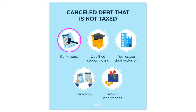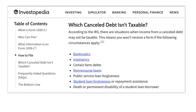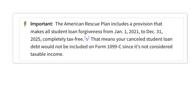Debt discharged in Title XI bankruptcy, including Chapters 7 and 13. Cancelled debt on qualified farms and real business property. Forgiven debt on qualified principal residence during specific periods. Debt cancelled due to insolvency.